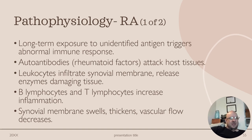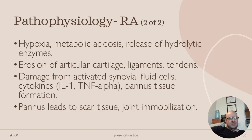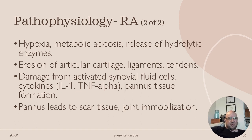In terms of pathophysiology, long-term exposure to an unidentified antigen triggers an abnormal immune response. Autoantibodies or rheumatoid factors attack host tissues, leukocytes infiltrate synovial membranes, and B and T lymphocytes increase inflammation. Synovial membranes swell and thicken, and vascular flow decreases, which can lead to hypoxia, metabolic acidosis, and release of hydrolytic enzymes. This causes erosion of articular cartilage, ligaments, and tendons, damage from activated synovial fluid cells or cytokines, and pannus tissue formation leading to scar tissue and joint immobilization.